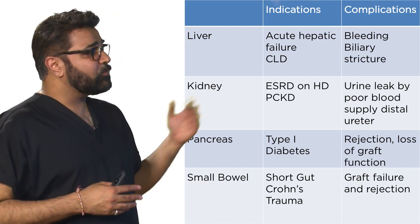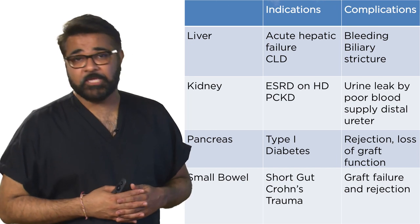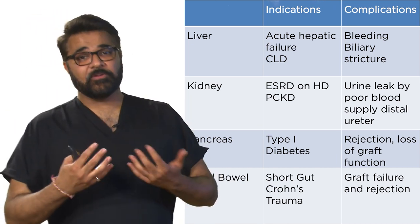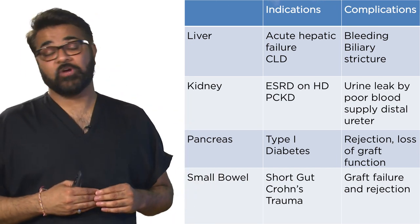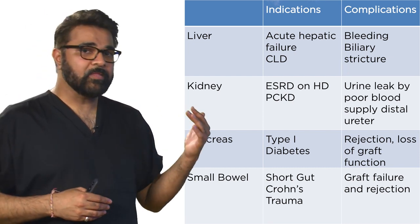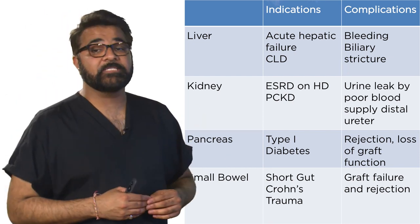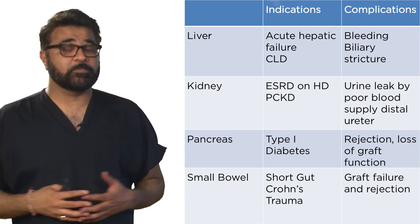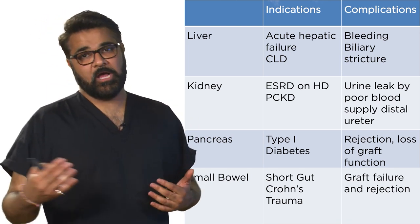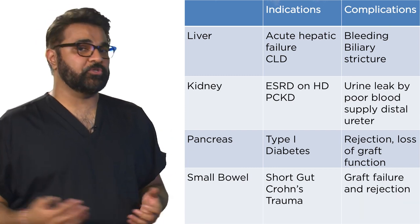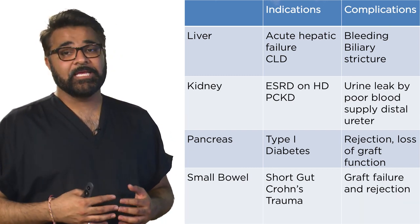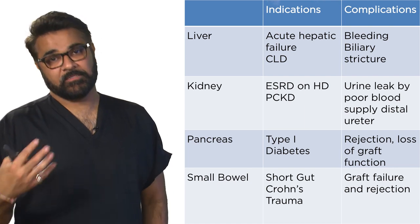Let's begin with liver transplant. The most common indications are acute hepatic failure and severely worsening chronic liver disease with an elevated MELD score. Complications include post-operative bleeding, and long-term complications can be biliary strictures, which occur because of ischemia to the graft.